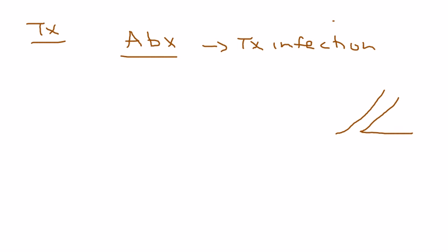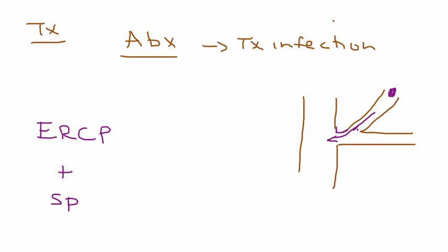And finally, treatment. Treatment, of course, you start the patient on antibiotics to treat the infection. But you have to get rid of that stone. So how do you do that? Remember, the stone is sitting there in the common bile duct, and you want to actually get it to pass down. So what do you do? You have to do a procedure known as an ERCP and then you have to do a sphincterotomy.